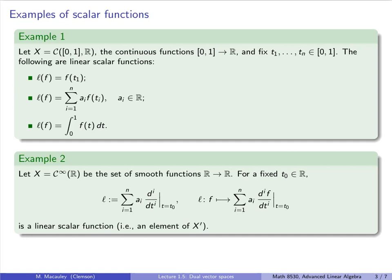Now, for a fixed real number t, we can define a linear scalar function to be any linear combination of differential operators where we then plug in t naught. So this looks more complicated than it is. Let's take a function f of t, and let's map it to, let's say, 2f double prime of 0 minus 3f prime of 0 plus 14f of 0. So that is a linear scalar function.